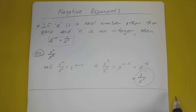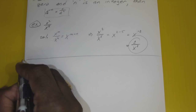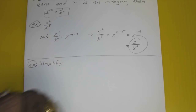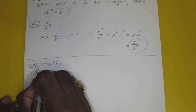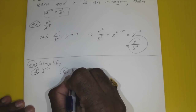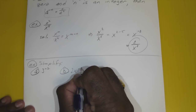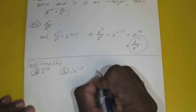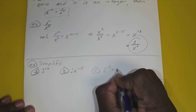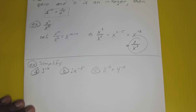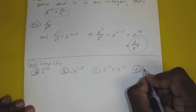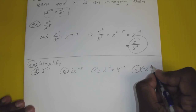Let's simplify four problems. Problem A: 3 to the negative 2 power. Problem B: 2 times x to the negative 5 power. Problem C: 2 to the negative 1 power plus 4 to the negative 1 power. Problem D: negative 2 to the negative 4 power.